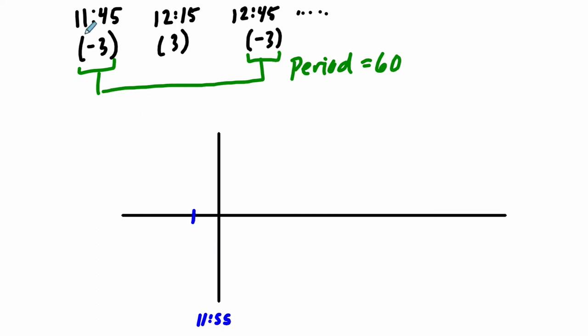So then I'm going to mark here, because I know what happens at 11:45, 10 minutes before. So negative 10, 10 minutes before 11:55, that's at a height of negative 3. Okay, so I can mark that right there. It is at negative 3.